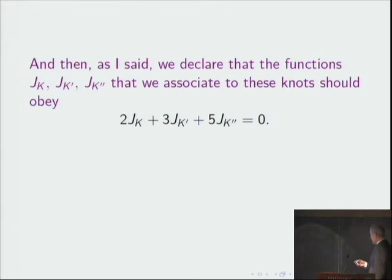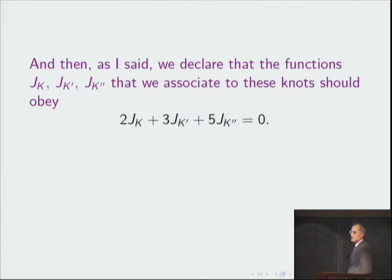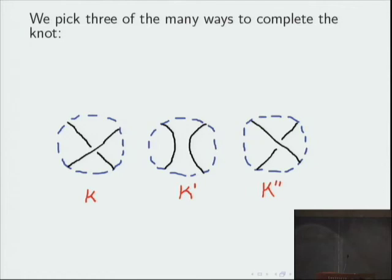And then we declare that the numbers J_K, J_K prime, and J_K double prime associated to these knots should obey this relation. Two times J of the first knot plus three times J of the second knot plus five times J of the third knot should be zero. So that's a relationship that Jones' knot numbers obey.